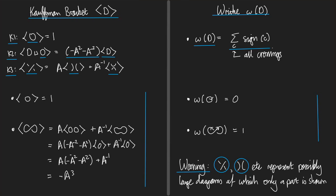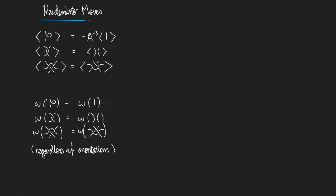Let's see how these things change under the Reidemeister moves. The first rule for the Kauffman bracket says that if you apply R1, you get the Kauffman bracket of the same diagram but with the kink removed, multiplied by minus A to the minus 3. Similarly for the writhe: if you apply R1, the writhe changes simply by subtracting 1.